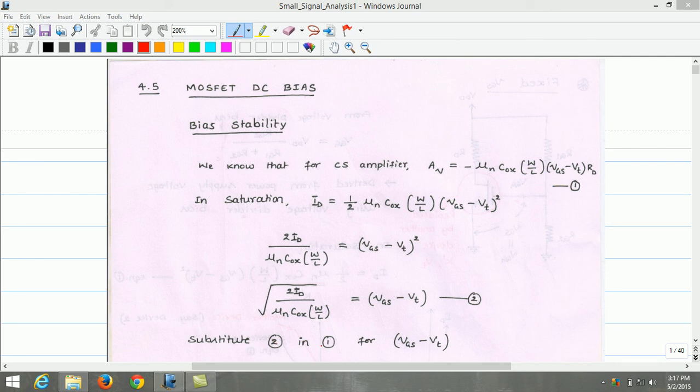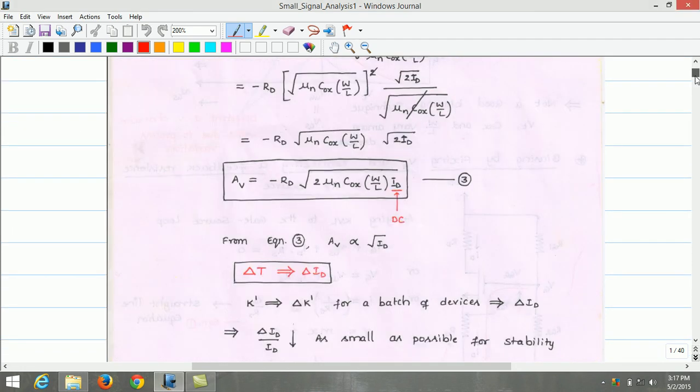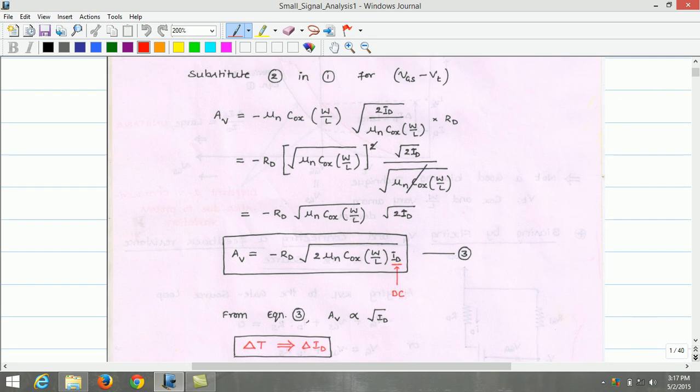Substituting equation 2 in 1 for VGS minus VT, we can obtain the following equation. The voltage gain AV is given by minus mu n COx times W by L. Instead of VGS minus VT, we have root of 2 Id divided by mu n COx times W by L into RD. On simplification, AV can be obtained as AV equals minus RD root of 2 mu n COx times W by L into Id. The Id here is called as DC drain current. Let us call this equation as 3.